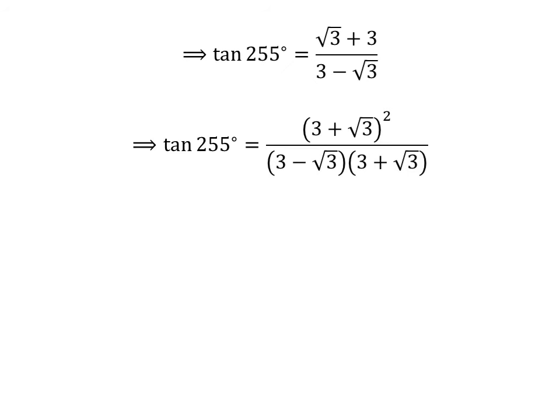Let us rationalize the fraction. Multiplying the numerator and the denominator by a common factor does not change the value of the fraction. So, let us multiply the numerator and the denominator of our fraction by 3 plus square root of 3. We get: tangent of 255 degrees is equal to square of 3 plus square root of 3, upon 3 minus square root of 3, times 3 plus square root of 3.